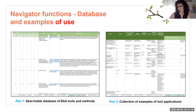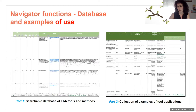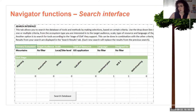Now let's look at the functionalities and how the navigator works. At the moment it exists in an Excel format, although we are developing an improved online version over the coming months. In this current Excel version, we have two main components: a database where all tools and methods are listed and can be searched, and a collection of examples of tool applications where users have reported their own experiences using tools.